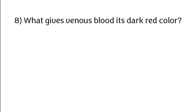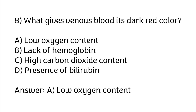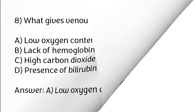What gives venous blood its dark red color? Options: Low oxygen content, lack of hemoglobin, high carbon dioxide content, presence of bilirubin. The correct answer is Option A: Low oxygen content.